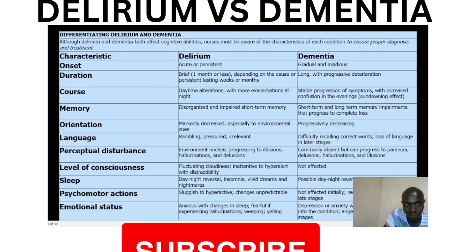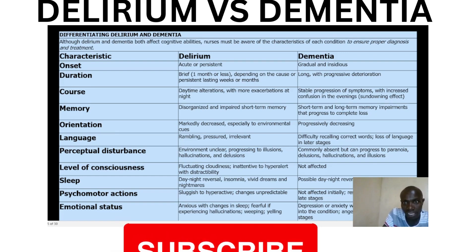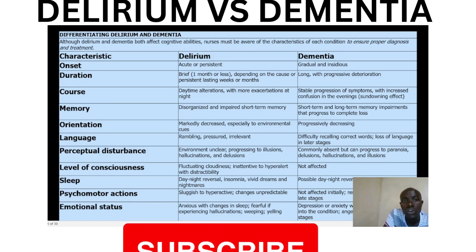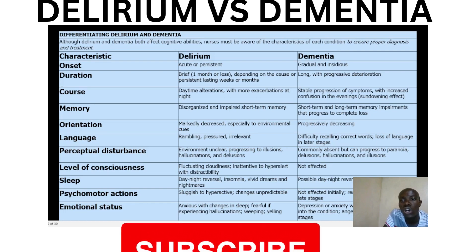In terms of onset, delirium is acute or abrupt, whereas dementia is gradual and insidious. In terms of duration, delirium is normally brief, depending on the course, lasting weeks or months, whereas dementia is long with progressive deterioration.